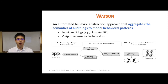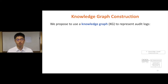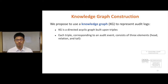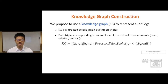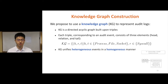In this project, we propose Watson, an automatic behavior abstraction approach that aggregates the semantics of audit events to model behavioral patterns. The input is audit logs such as Linux audit, and the output is representative behaviors. We propose to use a knowledge graph to represent audit logs — a knowledge graph is a directed acyclic graph built upon triples. Each triple is an audit event consisting of three elements: tail, head, and relation. Head and tail elements are system entities, and the relation is the system call. The advantage is that a knowledge graph can unify heterogeneous audit events in a homogeneous manner.